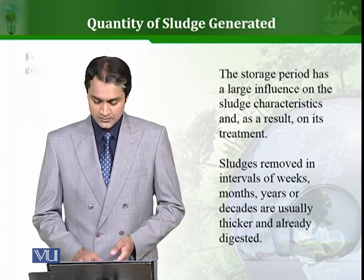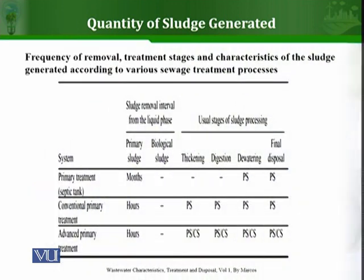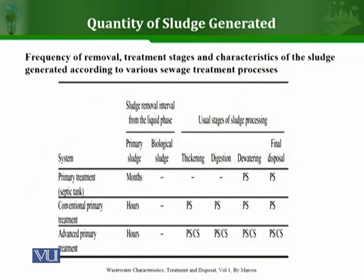We will now discuss in tabular form the frequency of removal, treatment stages, and characteristics of the sludge generated according to various treatment processes. We will start with the primary treatments, that is, the septic tank.